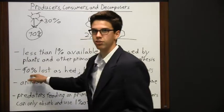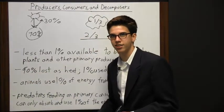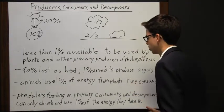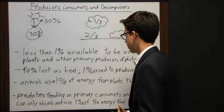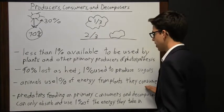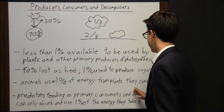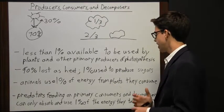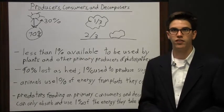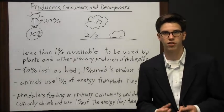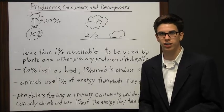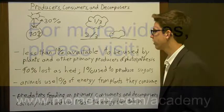Only less than one percent is available to be used by plants. Of that one percent, 90% is lost as heat and so only one percent can be used to produce sugars. Of that one percent, animals only use one percent of the energy from plants they consume, and the predators feeding on those primary consumers and decomposers can only absorb and use one percent of the energy they take in. So the number of steps in this chain must be limited for there to be sufficient solar energy to sustain life.